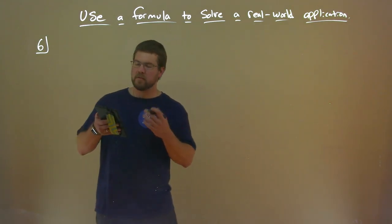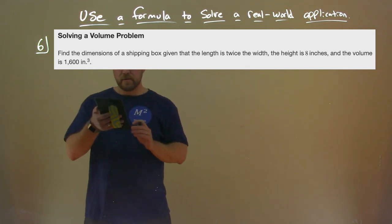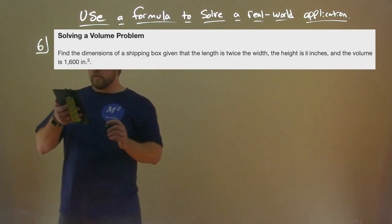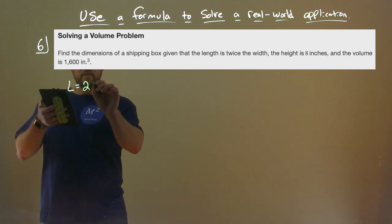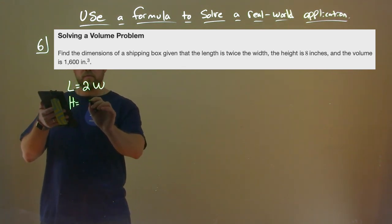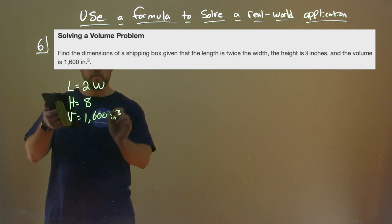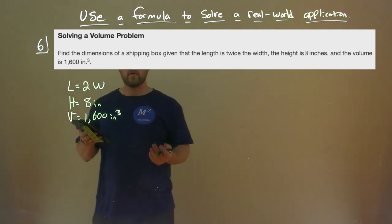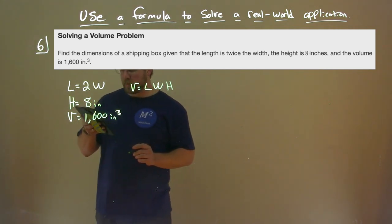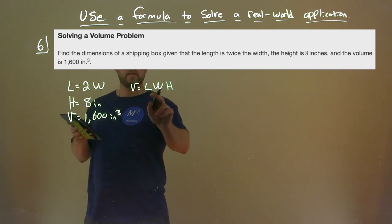Number six is a volume problem. Find the dimensions of a shipping box given that the length is twice the width, the height is 8 inches, and the volume is 1,600 cubic inches. So: length equals 2W, height equals 8 inches, and volume equals 1,600 cubic inches. The formula for the volume of a box is V equals length times width times height. We have pretty much everything we need to solve it.